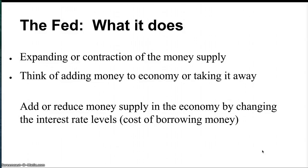So what does the Fed do? In the most simple terms, the Federal Reserve will either add money to the economy or take money out — it controls the money supply. Think of it as a faucet: it can open the tap and have more money flowing into the economy, or shut the tap down and have just a little bit dribble in. By changing the amount of money in the economy, it influences the interest rates that banks offer.